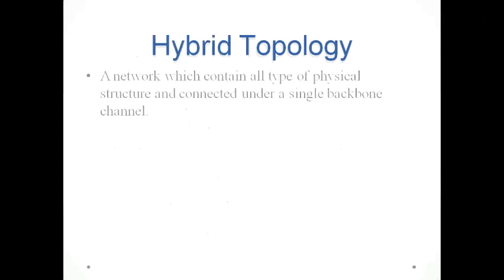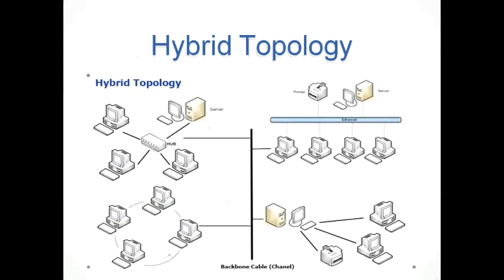In hybrid topology, a network contains all types of physical structures connected under a single backbone channel. Any kind of topology can be mixed with another topology — two, three, or four topologies can be mixed in a single topology. In this hybrid topology example, within a single backbone there is a ring topology, a bus topology, and a star topology, all connected in a single backbone cable. That is called hybrid topology.